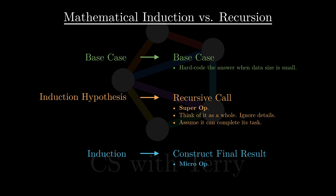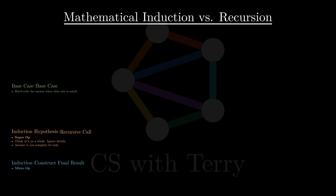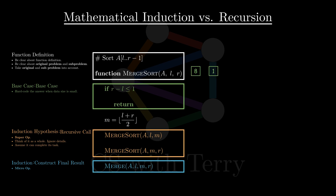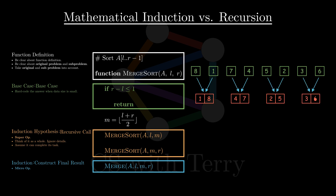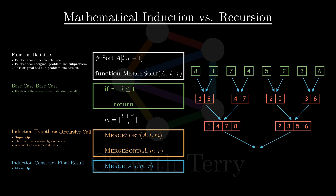To answer the question: why are we so sure that the recursion can accomplish its task? The answer is that as long as the base case is correct, if we assume that the recursive call is also correct, and if we handle the constructing final result step correctly, the entire recursion must be correct. Take merge sort as an example: in the base case, the length of the array is 1 and it is inherently ordered. We keep recursing and assume we can get two ordered subarrays and merge them correctly in each recursion step. Then the original array will be sorted.